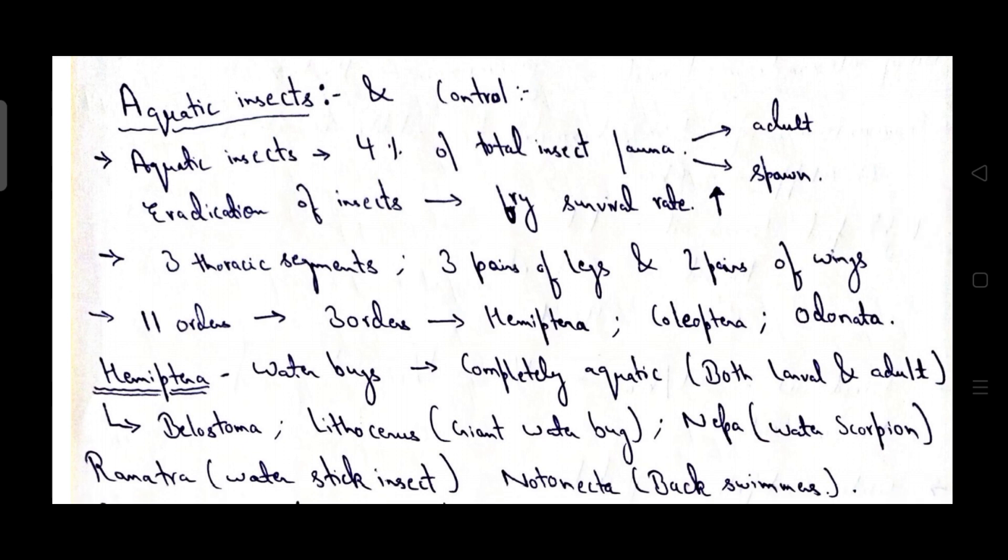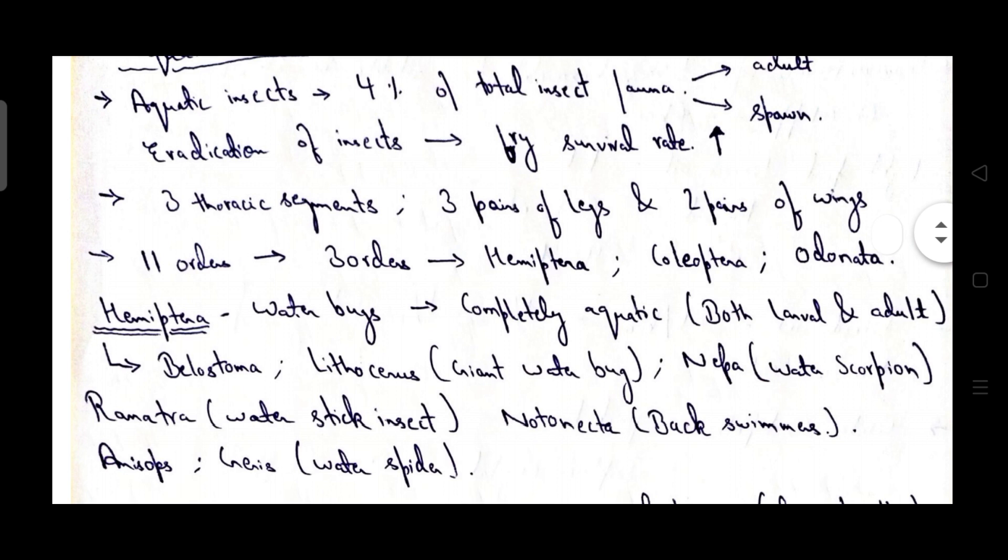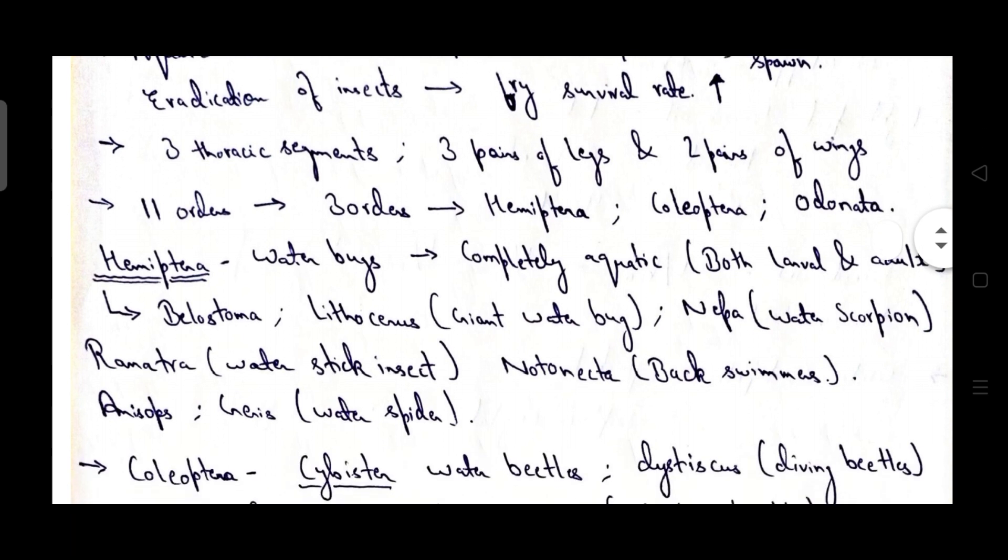Aquatic insects and control methods one-liners is very useful for your JRF exam as well as species related other cognitive exams. Aquatic insects constitute 4% of total insect fauna. By eradication of aquatic insects we increase the fry survival rate. Aquatic insects have three thoracic segments, three pairs of legs, and two pairs of wings.